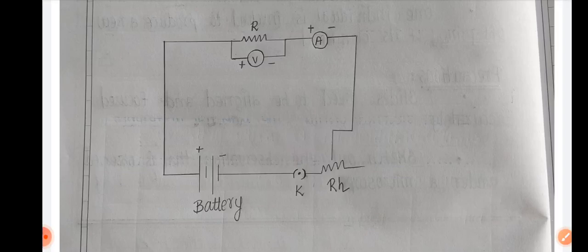Then you can change the current, then you can calculate the resistance. So R is equal to V by I.